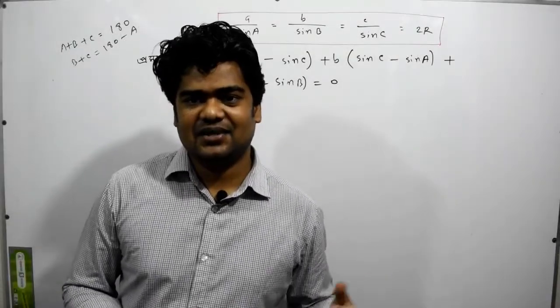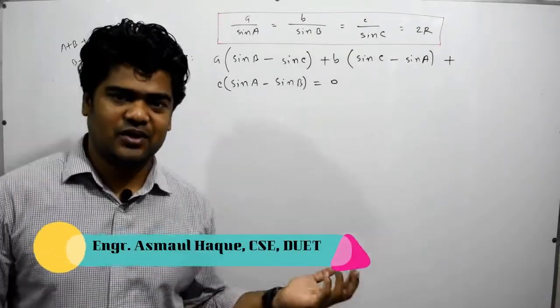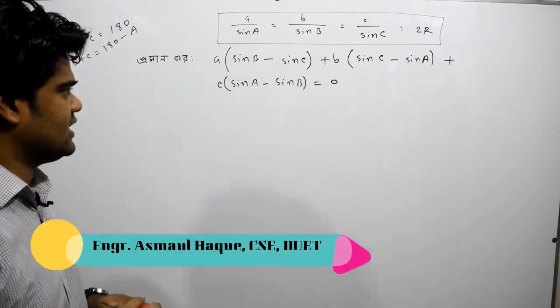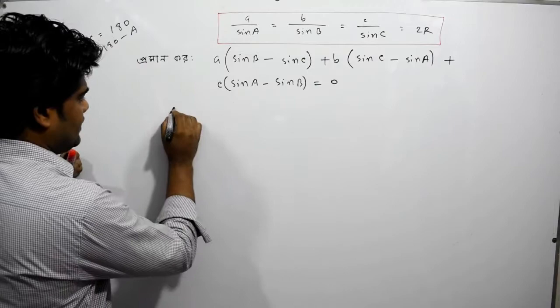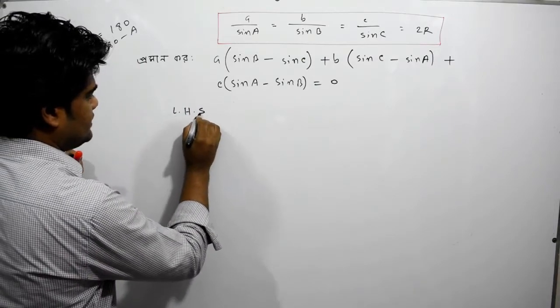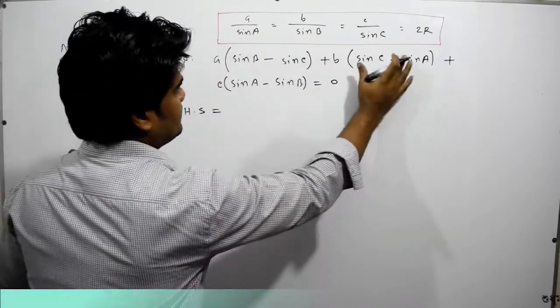So our next step is to prove the left-hand side. The left-hand side, LHS, is equal to 0. So I will find this left-hand side.